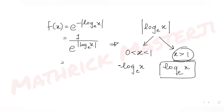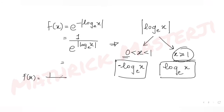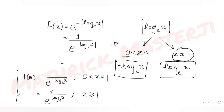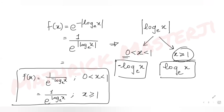So we can write the piecewise definition: for x greater than or equal to 1, the mod gives a positive logarithm, and for x between 0 and 1, the mod gives a negative logarithm. Note that x must be greater than 0 because the logarithmic function is not defined for x equal to 0 or negative values. So f(x) becomes 1 over e raised to negative log x (base e) when 0 < x < 1, and 1 over e raised to positive log x (base e) when x ≥ 1.